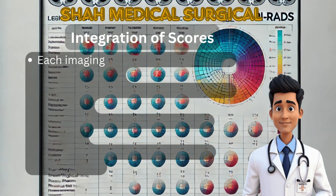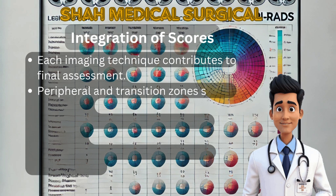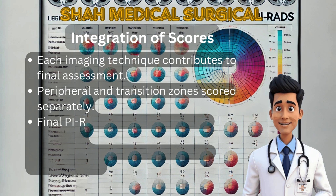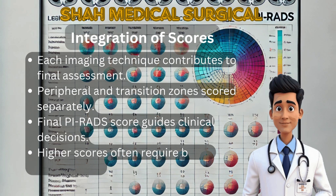The integration of scores from T2-weighted imaging, diffusion-weighted imaging, and contrast-enhanced imaging forms the final PI-RADS assessment. The prostate's peripheral and transition zones are scored separately, and the final score guides clinical decisions. Higher scores often necessitate biopsy for confirmation.